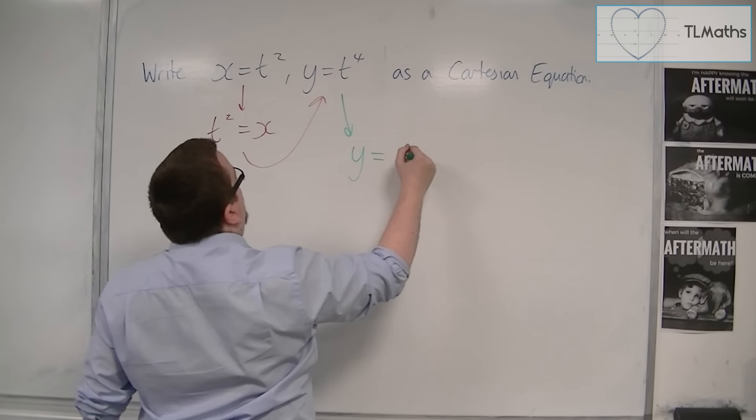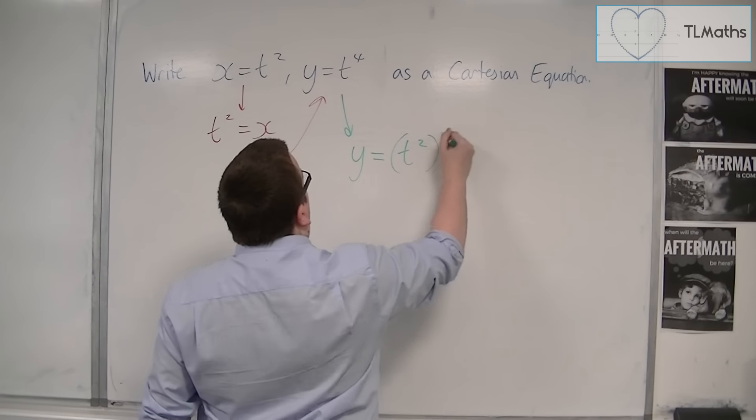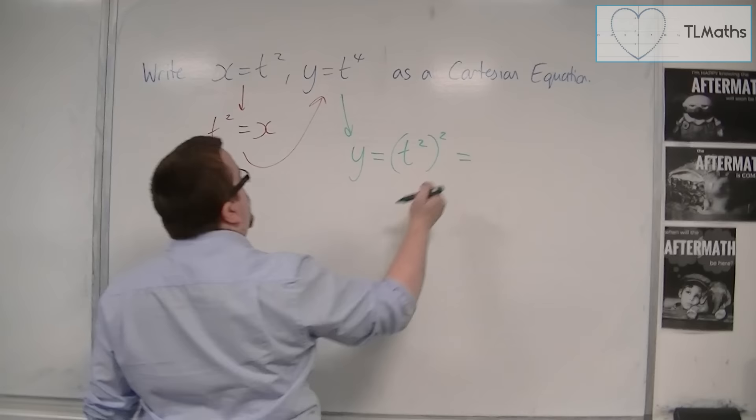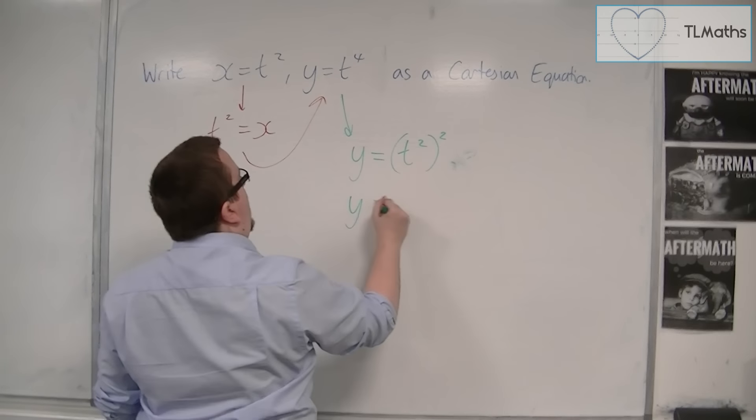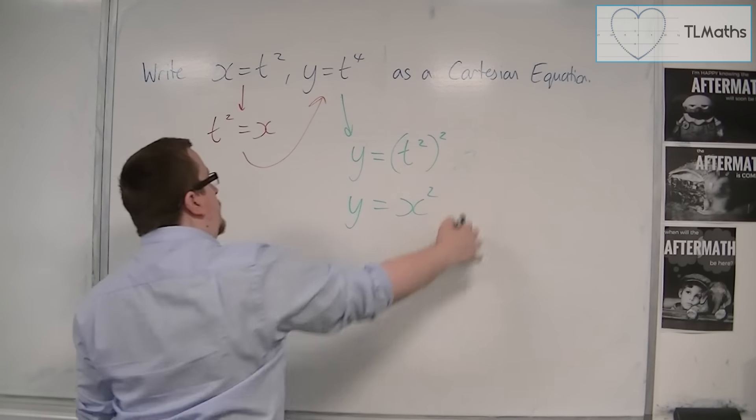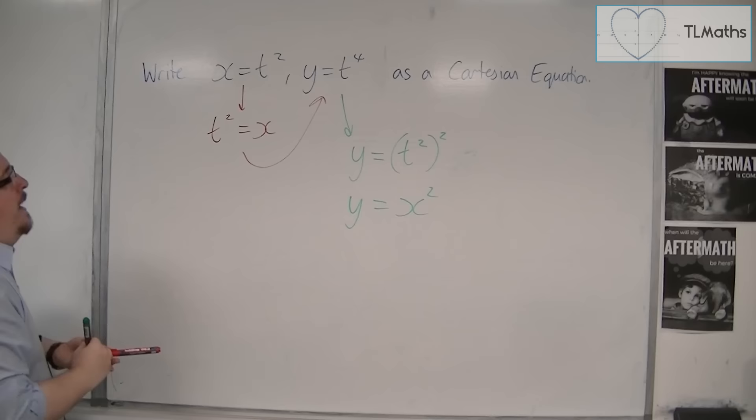then I could substitute that directly into the y equals t to the 4 and say, y is equal to t squared squared, and so y is equal to x squared. Okay, and that would be it.